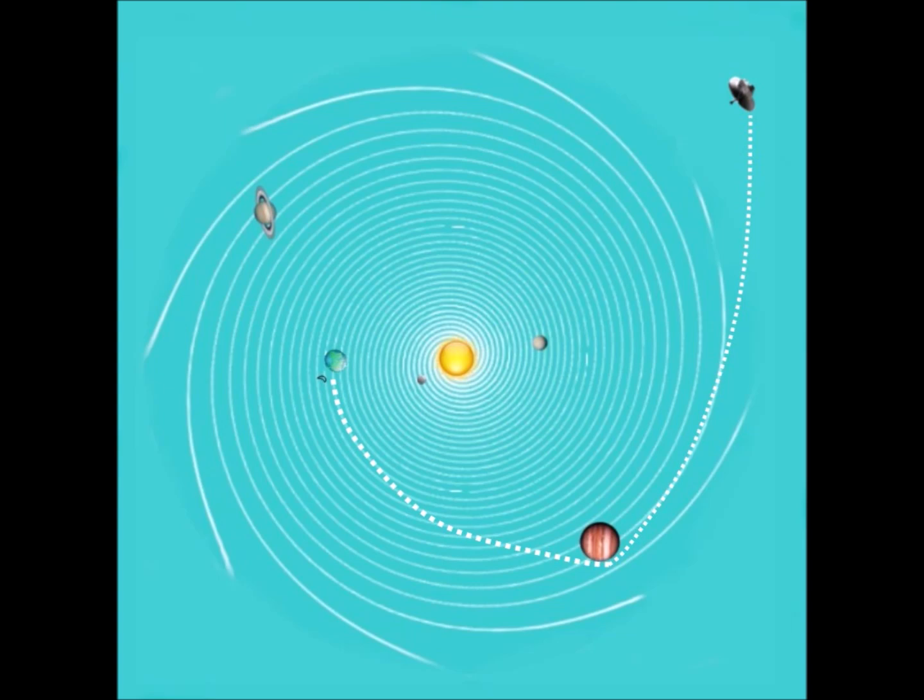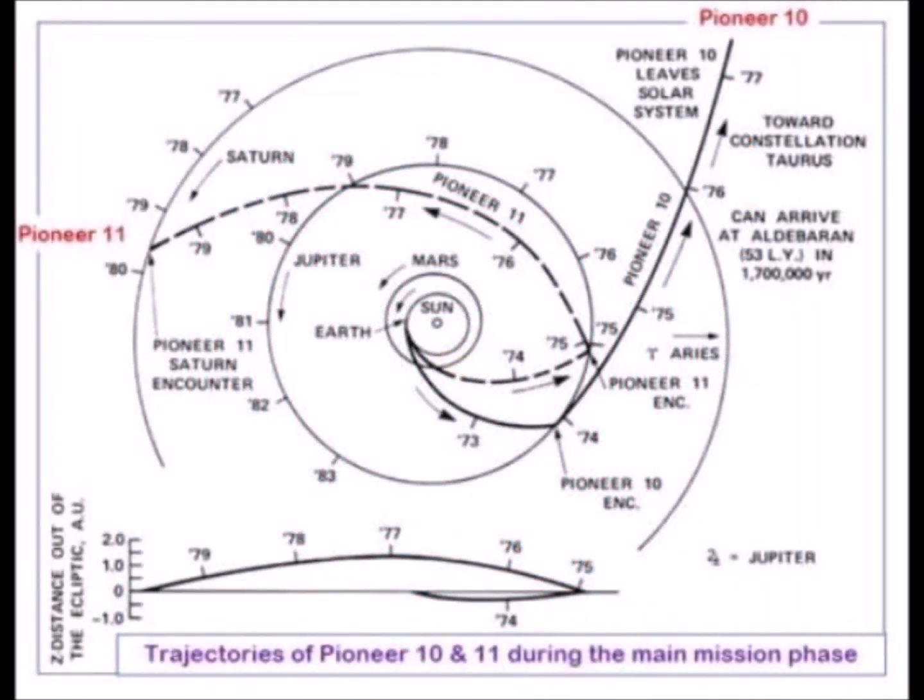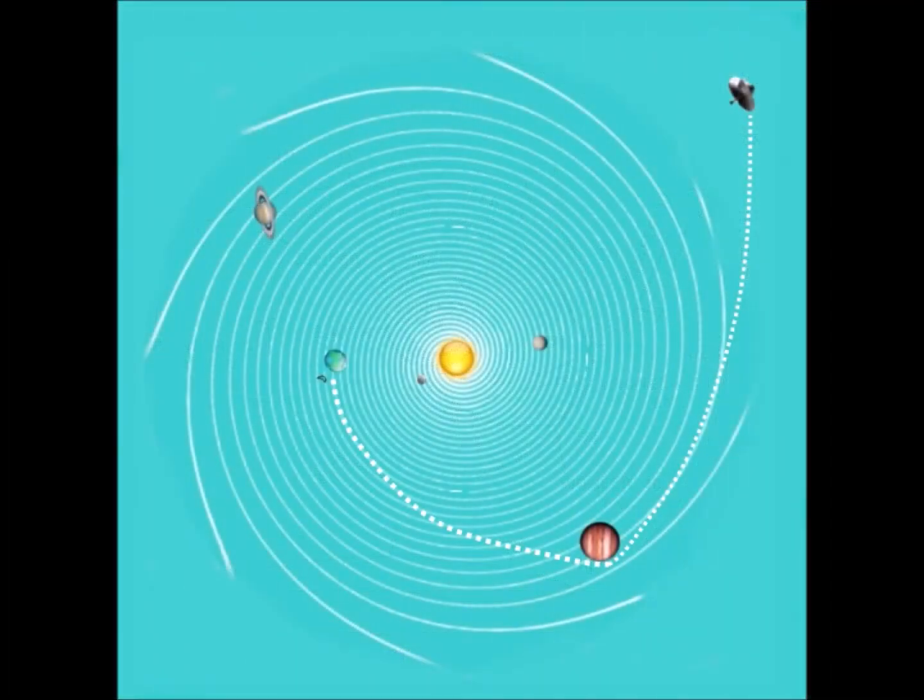This probe therefore has a speed relative to the ether of more than 8 kilometers per second. The Pioneer probe continues its trajectory in the direction of the whirlpool of the sun, but in the opposite direction to the whirlpool of the galaxy. It is subject to a drag proportional to their speed in the ether.